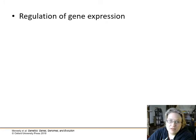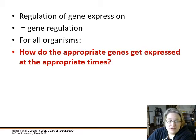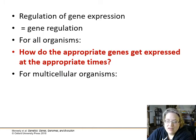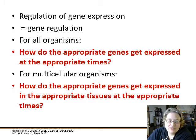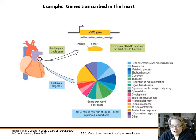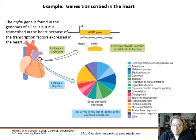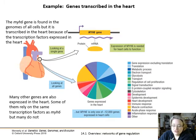This chapter is really about regulation of gene expression — how the appropriate genes coding for appropriate proteins and enzymes get expressed at the right time. If you're multicellular with many tissues, how do the appropriate genes get expressed in the appropriate tissues at the appropriate time? For example, the MYH6 gene is found in every cell's genome, but it's transcribed in the heart because of specific transcription factors expressed there.